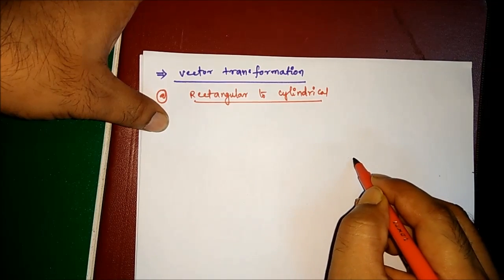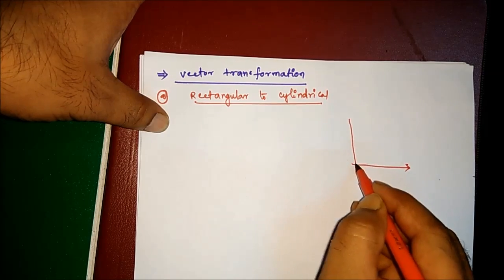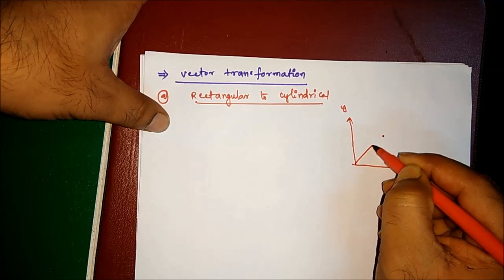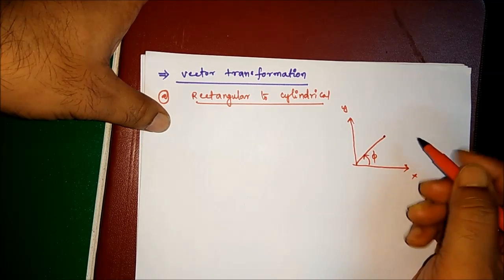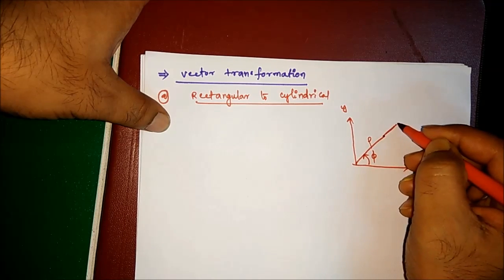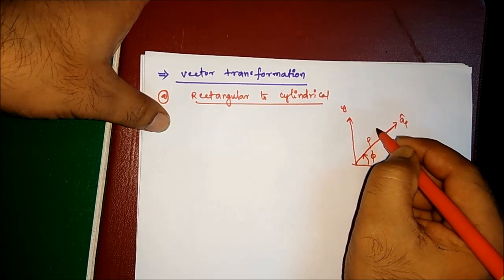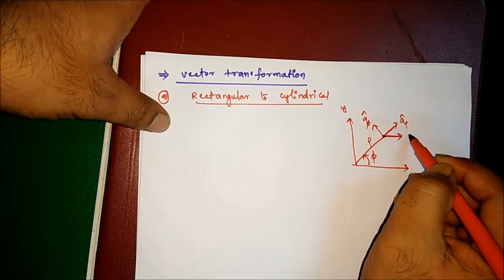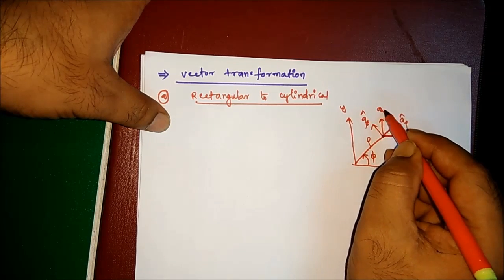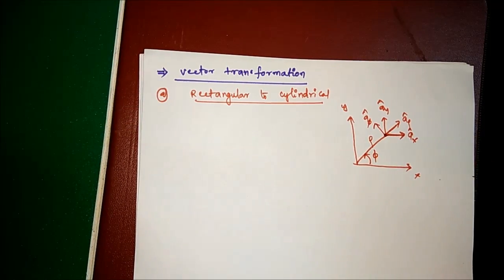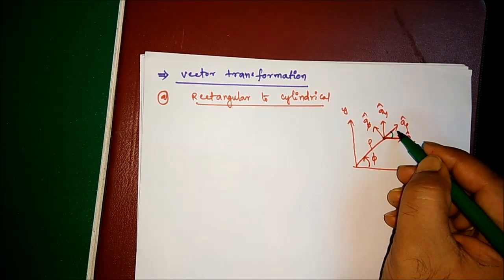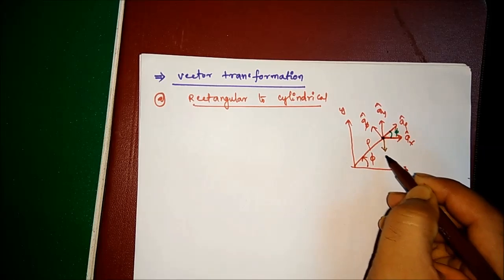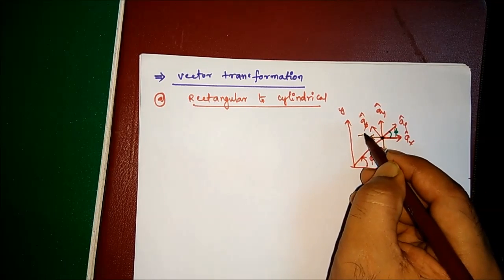Consider the XY plane. I am taking point P, and this will be the ρ direction — the unit vector along ρ is a_ρ, and along the φ direction is a_φ. On the same point, the X direction unit vector is a_x and the Y direction is a_y. Now if this angle is φ, and extending the axes, the negative directions are negative a_y and negative a_x.